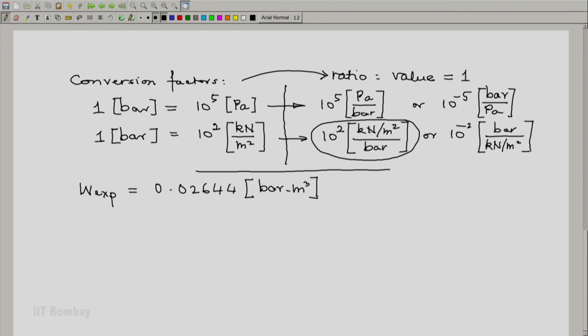All we do is multiply by this conversion factor whose value is 1. Because the value is 1 and it's dimensionless, we're not changing anything. But when we do this...